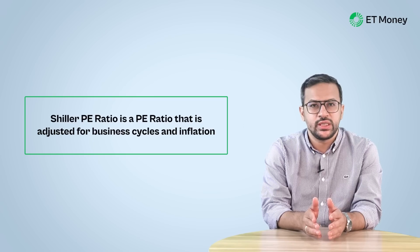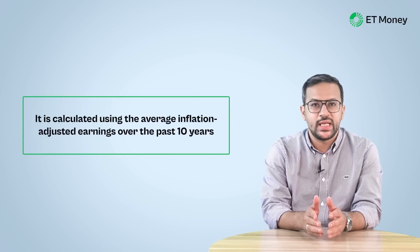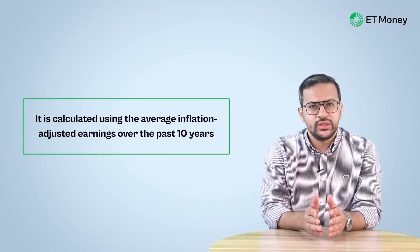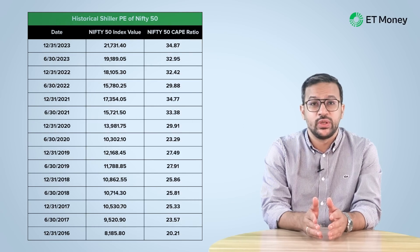Simply speaking, this PE ratio is adjusted for business cycles and inflation. It is calculated using the average inflation-adjusted earnings over the past 10 years. This helps to smooth out the impact of economic cycles and short-term fluctuations in corporate profits. With regards to India, the only published data we could find was on a website by Sybilis Research, which publishes this data semi-annually. The latest data is as of December 2023, when the Nifty 50 Shiller PE was 34.87. The average Shiller PE ratio of Nifty 50 in the last 7 years was around 28.5. So if we compare the recent ratio with the average, the index appears overvalued.